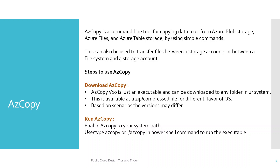Once you download the AzCopy executable, you have to run it. First, enable AzCopy to your system path. Once that is done, you can use either 'azcopy' or './azcopy' in a PowerShell command to run the executable. Using this command line, you simply provide the source and destination paths respectively to transfer your files.